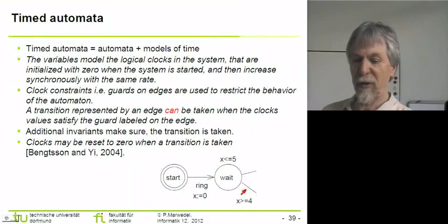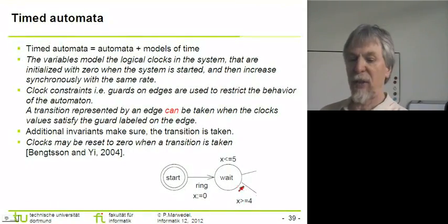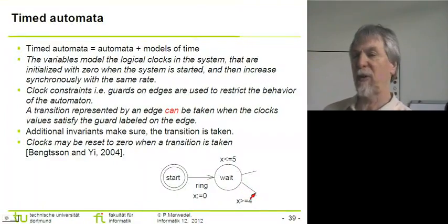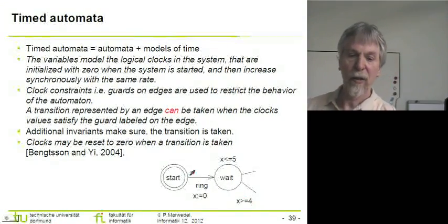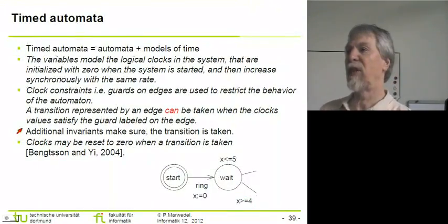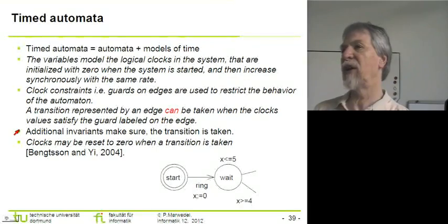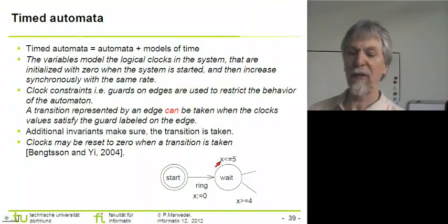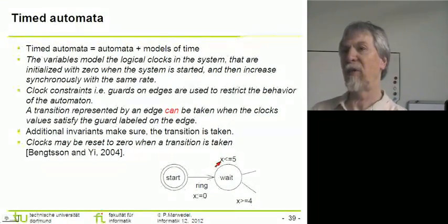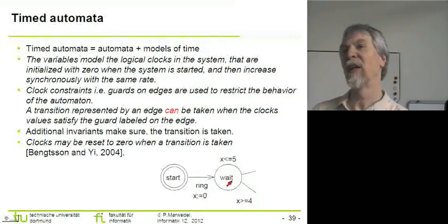For example, if we have a transition with a label x greater than or equal to 4, this means that at any time starting at time 4 this transition can take place, but it does not need to. To make sure transitions really take place, we can use additional invariants attached to states. An invariant can state that we are in the state no longer than until time 5, meaning somewhere between time 4 and 5 we must leave that state.